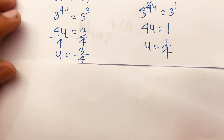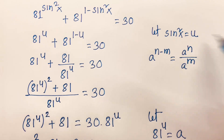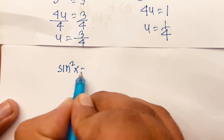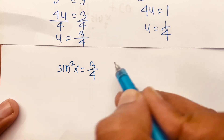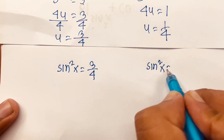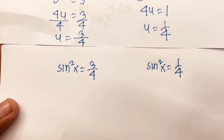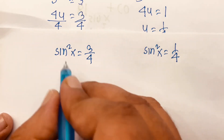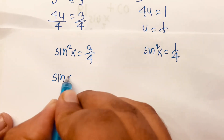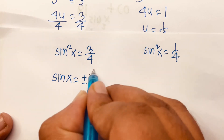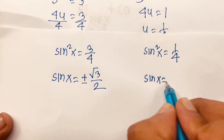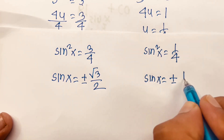Then remember that u is sine squared x. So sine squared x equals 3 over 4, and sine squared x equals 1 over 4. If I take the square root of both sides, sine x equals plus or minus square root 3 over 2, and sine x equals plus or minus 1 over 2.